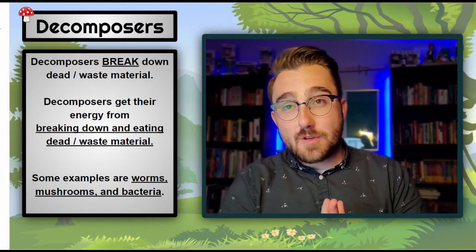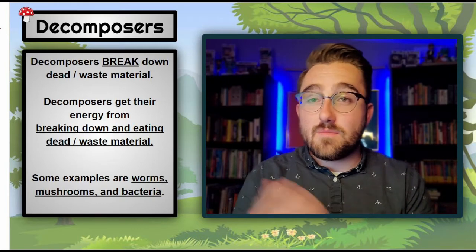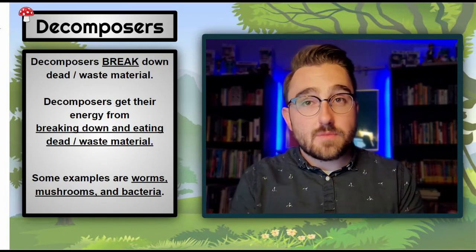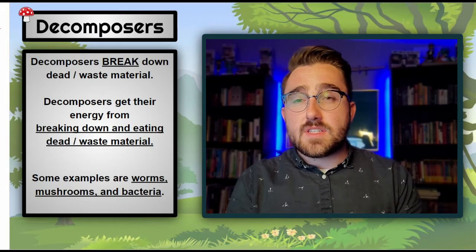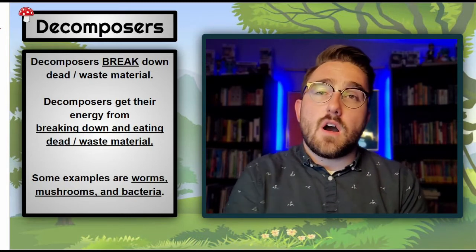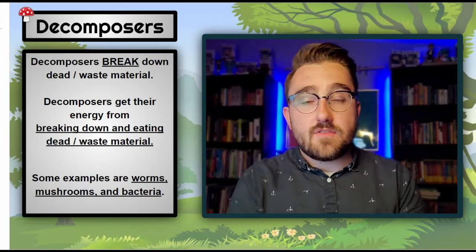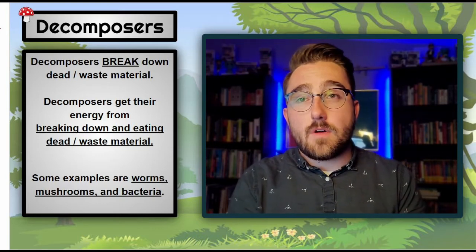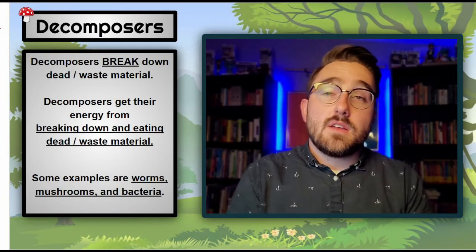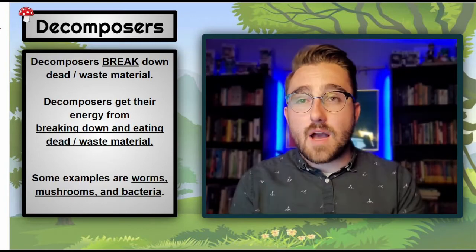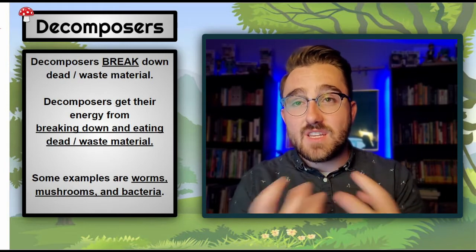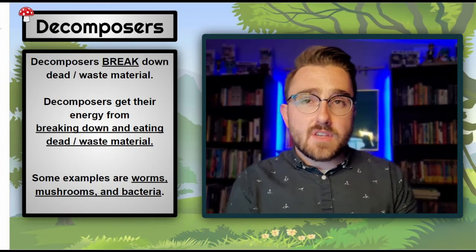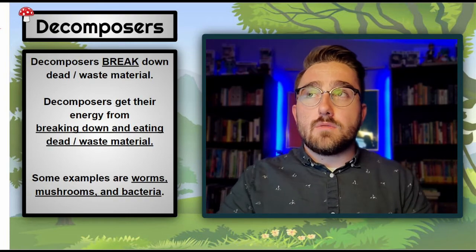Our final group is called decomposers. Decomposers are a little bit strange — we have plants as producers and animals as consumers, but decomposers are different. Their job is to break down leftover dead or waste material left behind by other things. For example, if an animal were to die in the woods, decomposers would go in and break that body down, pulling their energy from it. These tend to be smaller things — worms, bugs, bacteria — that can't go out and hunt something live.